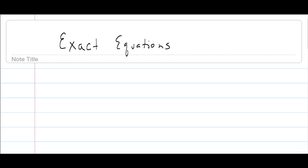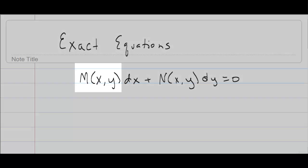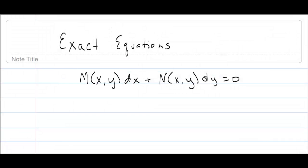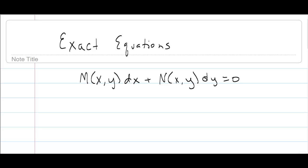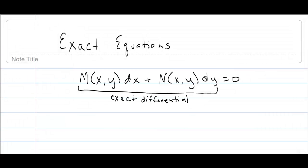We're going to talk about solving another form of first-order differential equations — those in the following form. An exact equation is in the form M(x,y)dx plus N(x,y)dy equals 0, in some region R of the xy-plane. This method will only work if the left-hand side is an exact differential. The criteria for an exact differential is if the partial derivative of M with respect to y equals the partial derivative of N with respect to x.